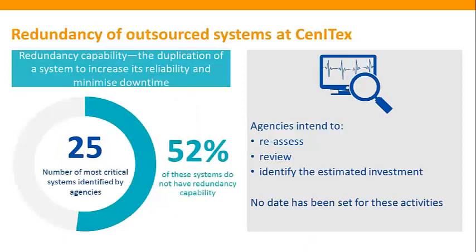Six of the seven departments outsource the hosting of the majority of their systems to CenITex. CenITex reported that only nine of the 25 most important systems identified by agencies hosted at CenITex have secondary standby systems to provide a full and rapid recovery, and 13 systems have no redundancy capability, including systems that provide services for criminal justice, marine safety, and bushfire management. Agencies intend to reassess 25 of their most important systems, review their order of priority, and identify the estimated investment required to establish and maintain an appropriate level of redundancy, but no date has been set for this activity to occur.